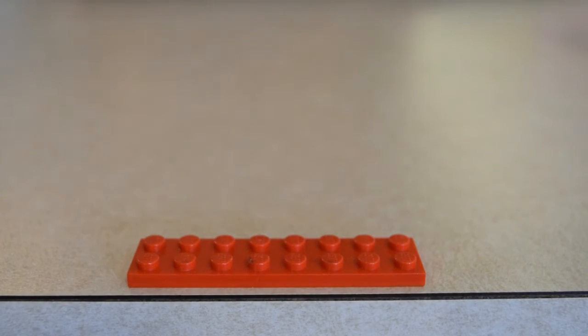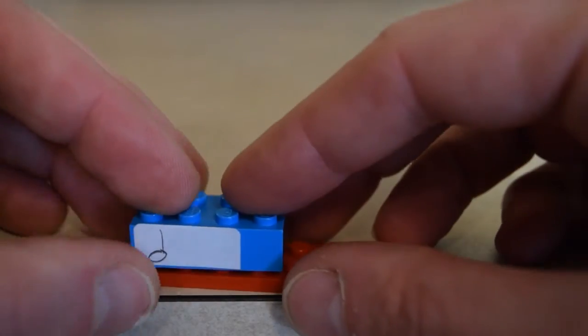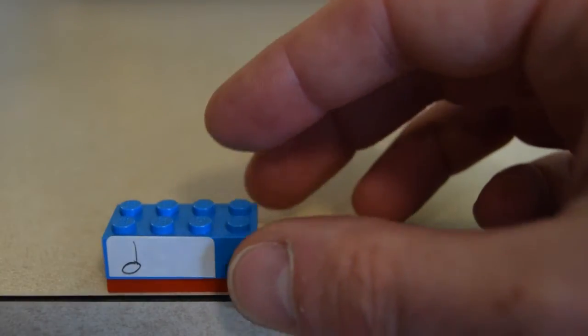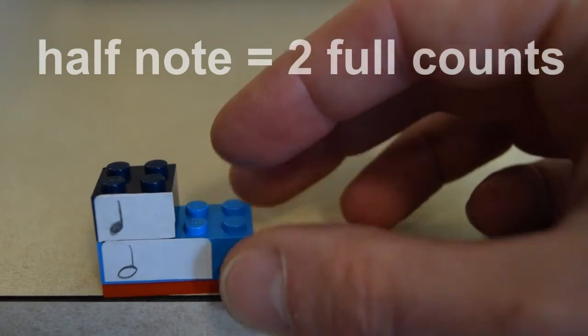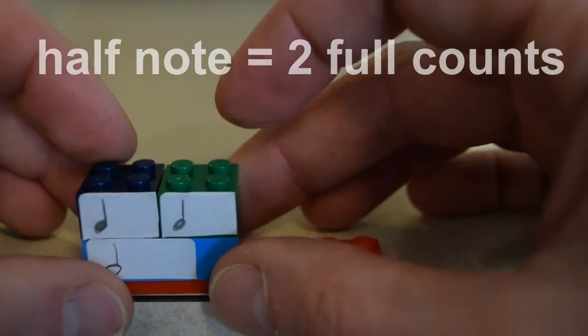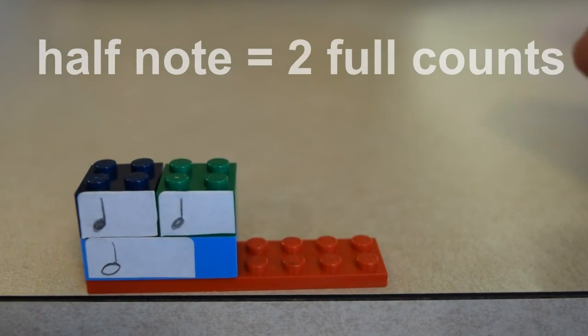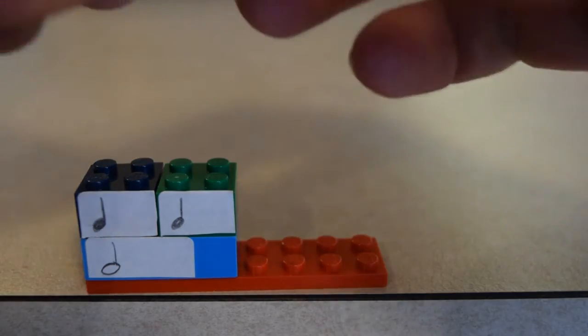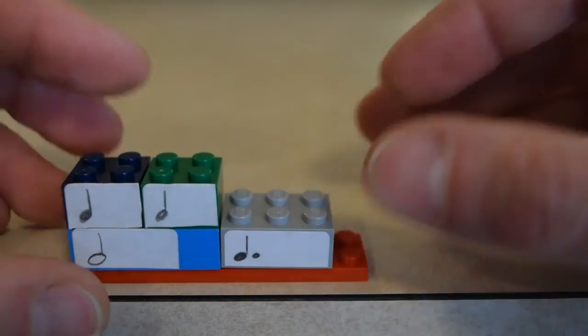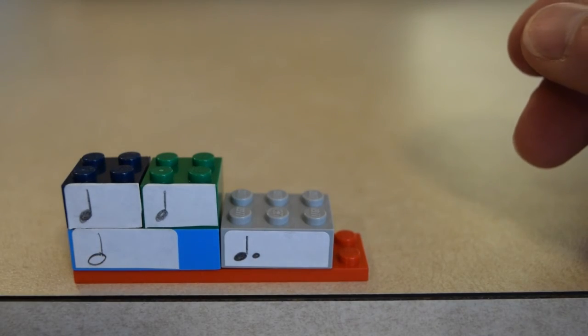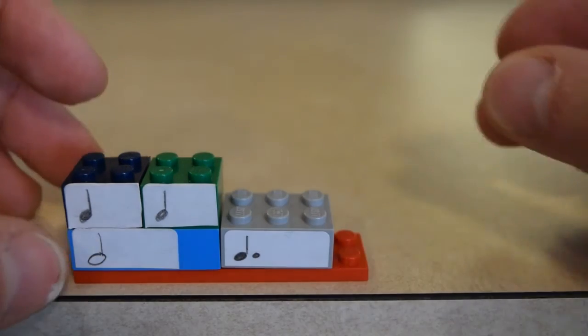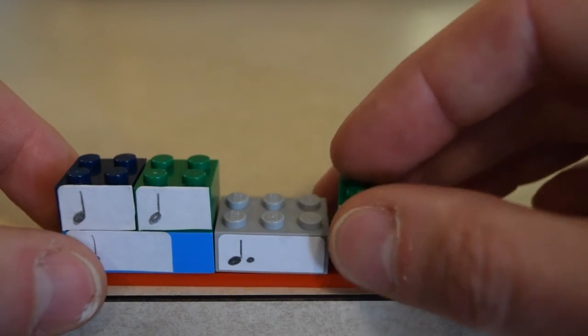In the third measure of All Through the Night, we start off with a half note. And I'm just going to put two quarter notes on top of that, just to remind us that that's two full counts long. T-A-A or half note. Then we have our dotted quarter note and a single eighth note after that, because that's, if you look, that's all that would fit into this measure.